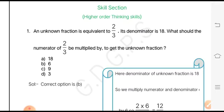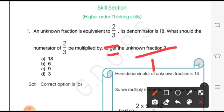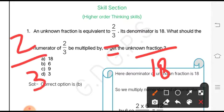Its denominator is 18. What should the numerator of 2 by 3 be multiplied by to get the unknown fraction? The question says that we have an unknown fraction whose denominator is given, and we have been told that that fraction is equivalent to 2 by 3.